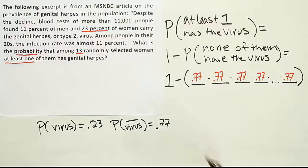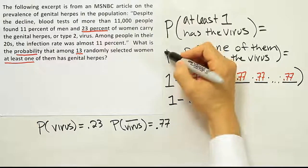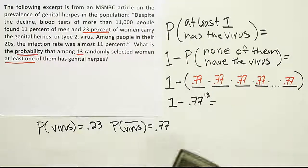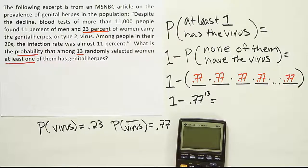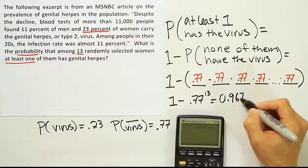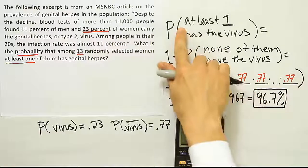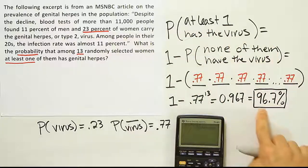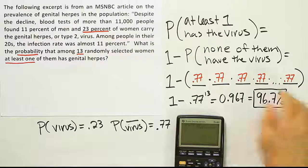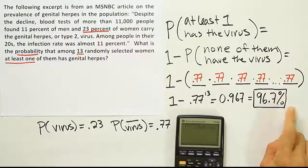The final answer is 1 minus 0.77 raised to the 13th power. Calculating that gives 0.967, or basically 96.7%. So the probability that at least one of the 13 women has the virus is 96.7%. This means if someone were to randomly have intercourse with 13 different women, the probability of encountering at least one woman with the virus is almost 97% — an extremely high probability.